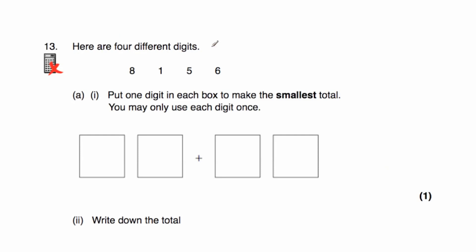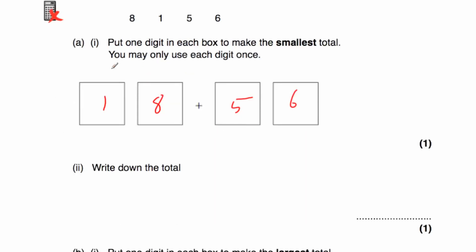Question number 13 says here are four different digits: 8, 1, 5, and 6. We've been asked to put each digit in a box to make the smallest possible total when we add them, and we may only use each digit once. So I'm going to go for 18 plus 56, putting the smallest digits in the tens — the 1 and the 5 — and the larger two digits in the ones columns, the 8 and the 6. You could also have 16 plus 58. Working out 56 plus 18: 6 plus 8 is 14, put 4 down and carry 1; 5 plus 1 plus 1 is 7. So the answer would be 74.